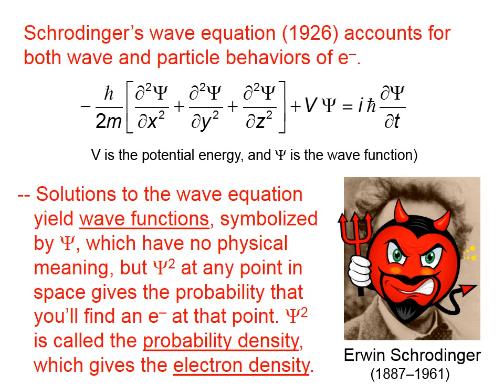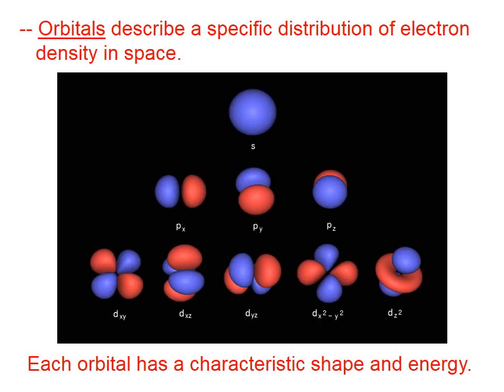In other words, we can use Schrödinger's equation to determine the probability of where we might find electrons. The solutions give us unique shapes for locations that have a high probability of finding an electron. We call those regions of space orbitals.